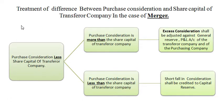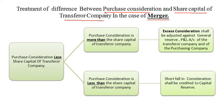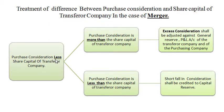In the third step, we find the difference between purchase consideration and paid up share capital of the transferror company in case of merger. This is simply: Purchase Consideration (calculated in Step 1) less Paid Up Share Capital of the transferror company (calculated in Step 2).